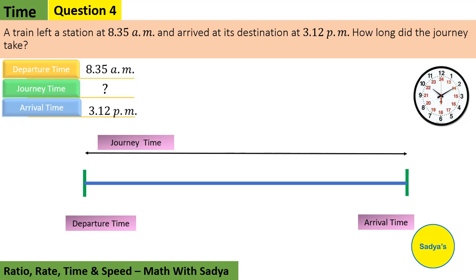A train left a station at 8:35 a.m. and arrived at its destination at 3:12 p.m. How long did the journey take?